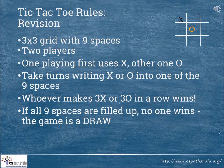Let's revise the tic-tac-toe rules. There is a 3x3 grid with 9 spaces. There are 2 players: one playing first uses crosses, the other uses knots. Take turns writing crosses or knots into one of the 9 spaces. Whoever makes 3 crosses or 3 knots in a row wins. If all 9 spaces are filled up and no one wins, the game is a draw.